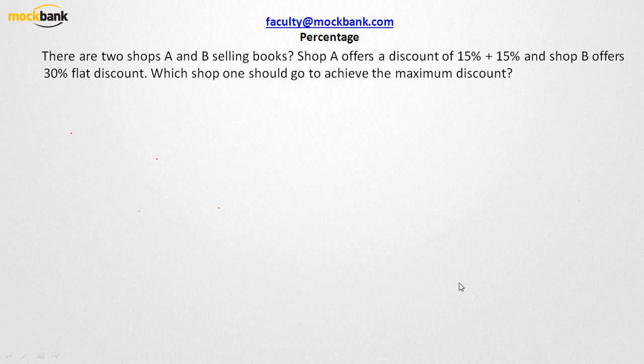In this particular problem, it says that there are two shops. Shop A offers a 15% plus 15% discount, and Shop B offers a flat 30% discount. My question is: which shop should we be going to as a customer? At the very first glance, it might seem that both of them are offering the same discount. But let us solve it.